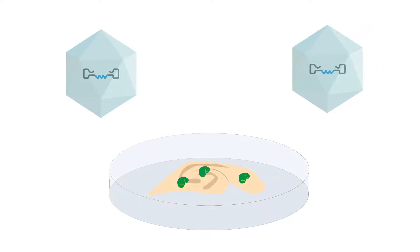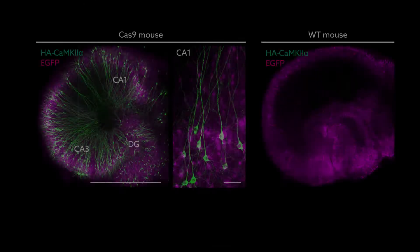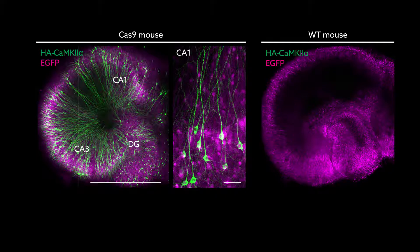The team tested the approach in mouse brain slices, using CRISPR to add HA or GFP to a protein found in neurons. The gene editing beautifully lit up neurons, many of which were no longer dividing.